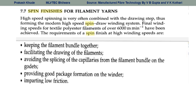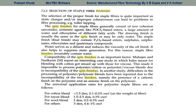For filament yarns, high spinning speed is often combined with drawing steps to form modern high-speed draw-winding systems. The requirements of spin finish at high winding speed include: keeping the filament bundle together, facilitating drawing of filament, avoiding spacing of capillaries from the filament bundle, providing good package formation on the winder, and imparting low friction. When selecting stable fiber finishes, toe cohesion must be considered, along with antistatic agents like POCl3-based esters.